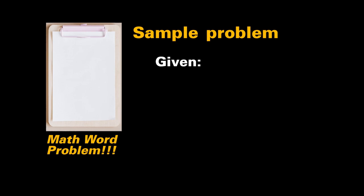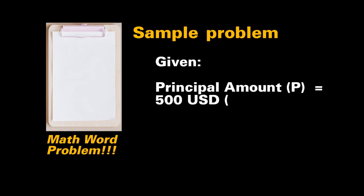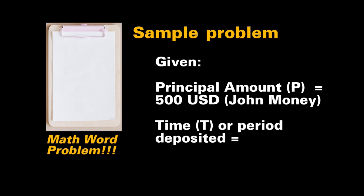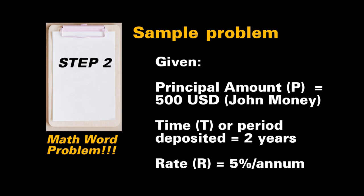Then step two shall be applied: write down the given. The given is principal amount, which I designated as P, equivalent to 500 US dollars. Another given is the time or period, designated as T, equivalent to two years. Another given is the rate or interest percentage per year, designated as R, equivalent to 5%.